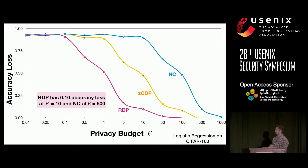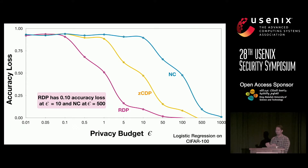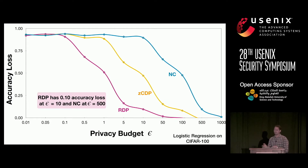Here are the results for logistic regression trained on CIFAR-100. RDP has the most improved composition, and hence across all epsilon values it achieves much better accuracy than naive composition. If you fix the privacy budget, RDP adds much less noise, or equivalently, if you restrict the amount of noise added, RDP consumes an order of magnitude less privacy budget than naive composition. As highlighted, RDP has an accuracy loss of 0.1 at epsilon 100, while naive composition achieves the same accuracy only at epsilon 500.